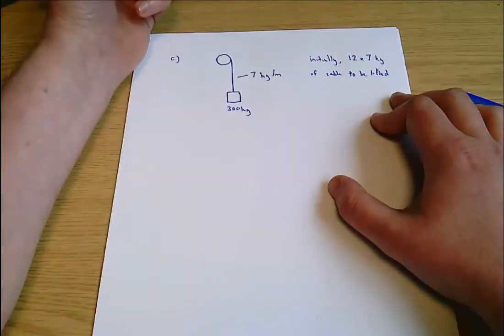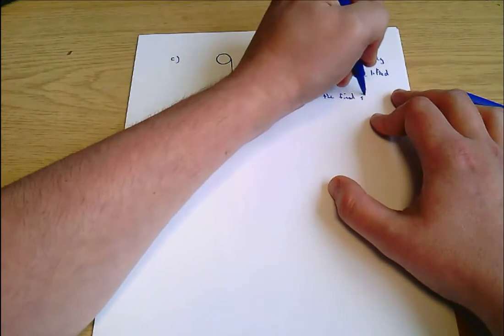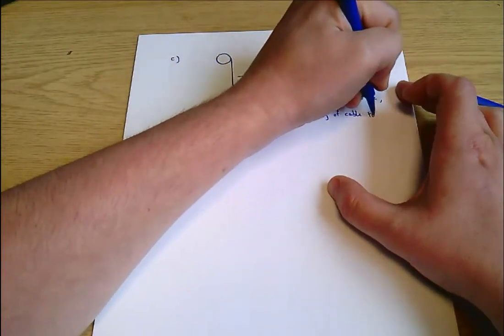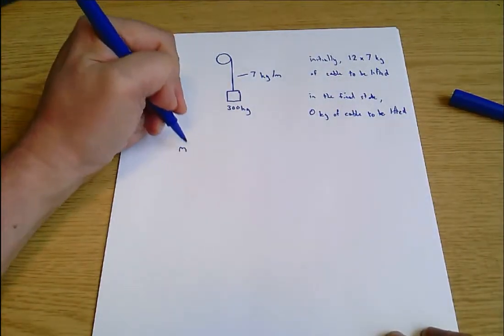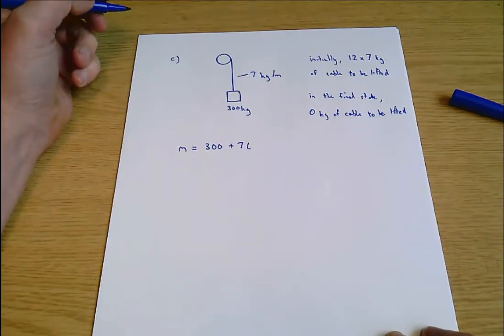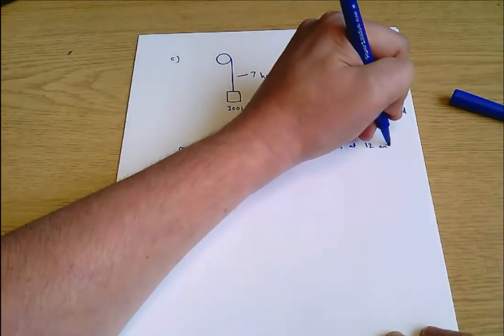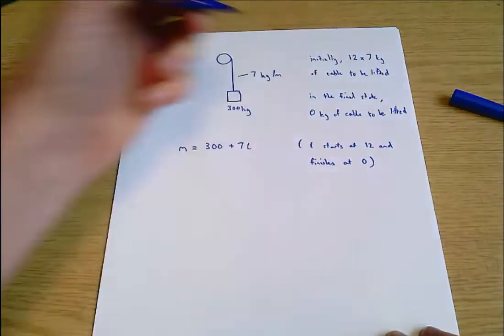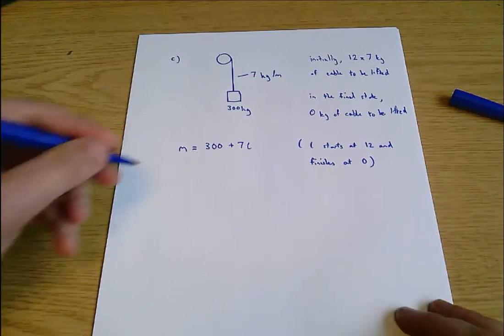In the final situation, at the end of all of this, you've reeled the whole thing in. So in the final state, 0 kilograms of cable to be lifted. We're also given this equation that m the total mass equals 300 plus 7L, where L is the length of cable still unreeled. So L starts at 12 and finishes at 0. That's the same information in two different ways. I've got a good idea now about what's happening. It says plot a graph of force against displacement. So let's just do that.